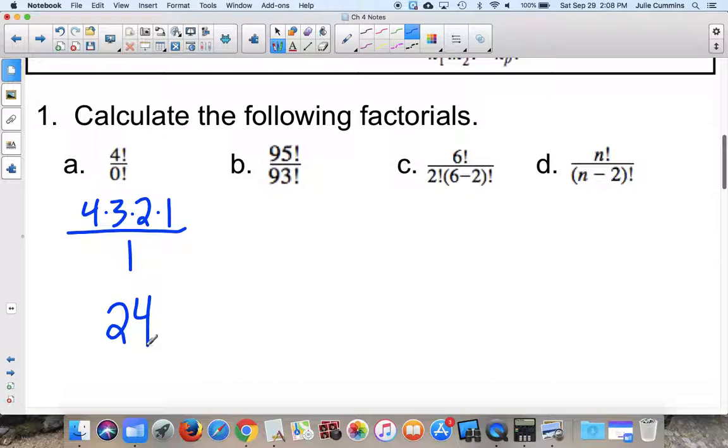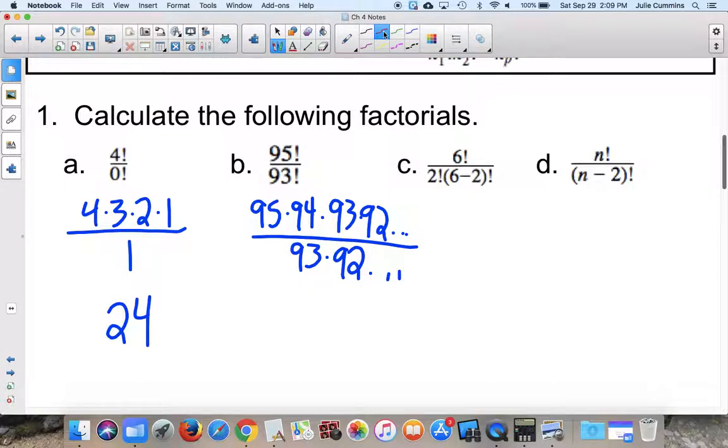95 factorial over 93 factorial. I don't know if your calculator will do this. Those are really big numbers. 95 factorial means 95 times 94 times 93 times 92, and we're going to keep going. Obviously, I'm not going to write them all out. That would be obnoxious. Divided by 93 factorial. 93 times 92 times 91, and write them all out. Now, something interesting happens here. Since these are all multiplication, those are going to cancel. These are going to cancel. Everything past this is going to cancel. So we really only need to do 95 times 94, which is 8930.